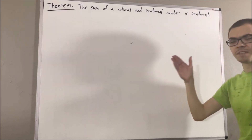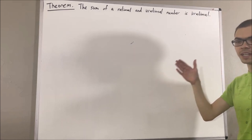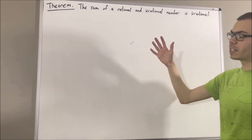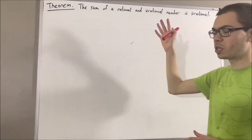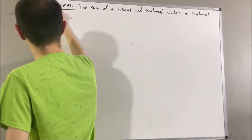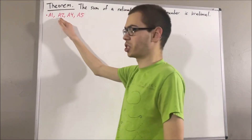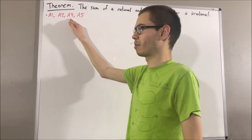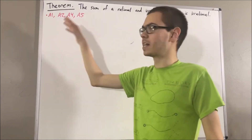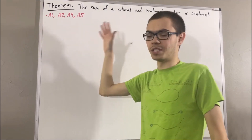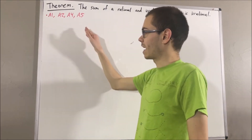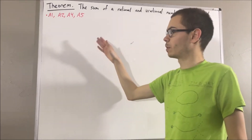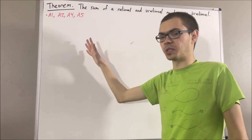In this series, we are using a list of 10 axioms for the real number system, and I'll leave that list of axioms in the description below. In this video, we are going to be using axioms 1, 2, 4, and 5. Axioms 1 and 2 are just the commutative and associative laws. Axiom 4 tells us about the existence of the real number 0, and it tells us: for all real numbers x, x plus 0 is equal to x. Axiom 5 tells us that every real number has a negative, and we have: for all real numbers x, x plus the negative of x is equal to 0.